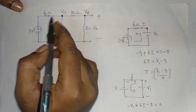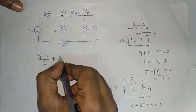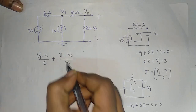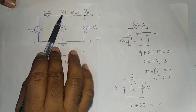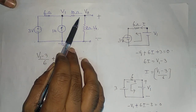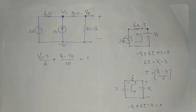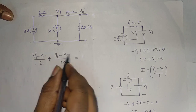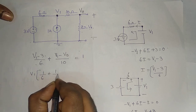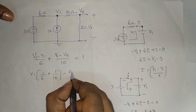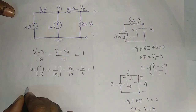The outgoing current is V1 minus V0 by 10. Two outgoing currents — that equals incoming current. The IS2 current source gives incoming current of 1A. So we have: (V1 minus 3) / 6 plus (V1 minus V0) / 10 equals 1.